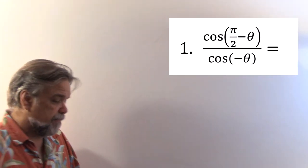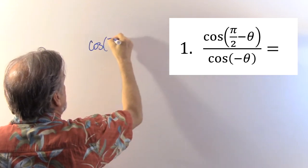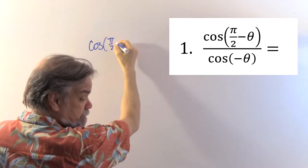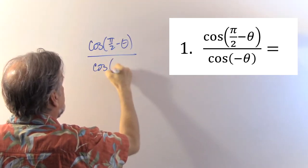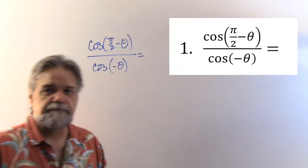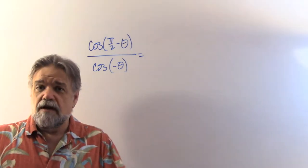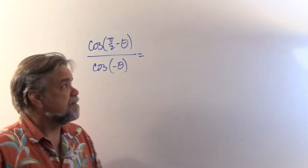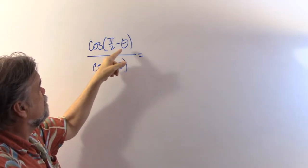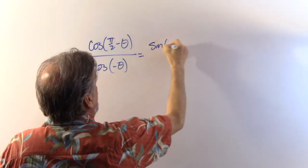The first problem says we have the cosine of pi over two minus theta divided by the cosine of negative theta. So I want to try to simplify this. My trigonometric identities taught me that the cosine of pi over two minus theta is just the sine of theta.